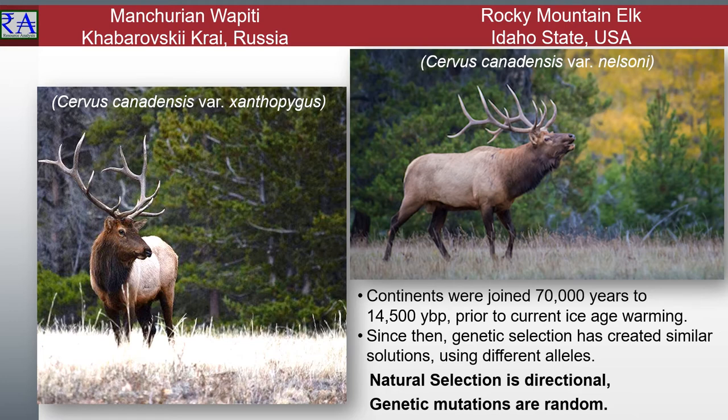Restrictive environments faced by each population favored random mutations to solve similar adaptation needs. They may look similar, but the DNA of these representatives of historically related species is no longer identical — it is not similar enough to support genetically viable offspring made between mates of these two populations.